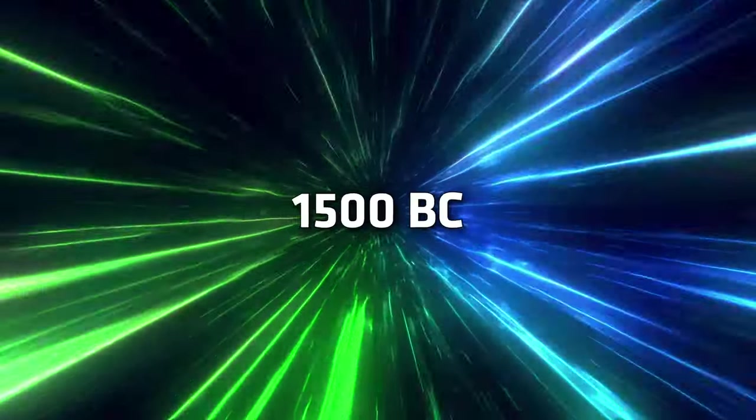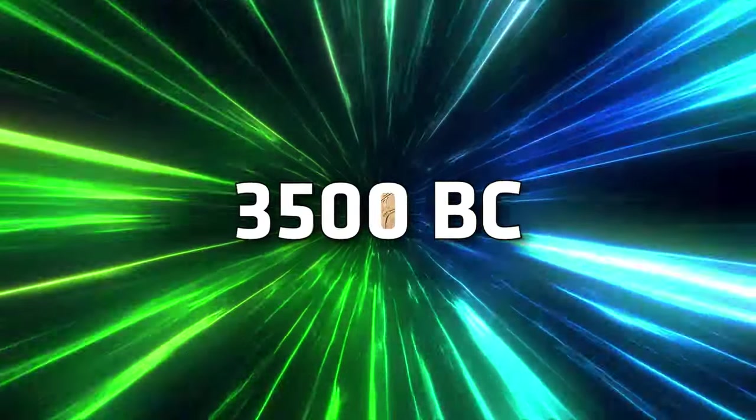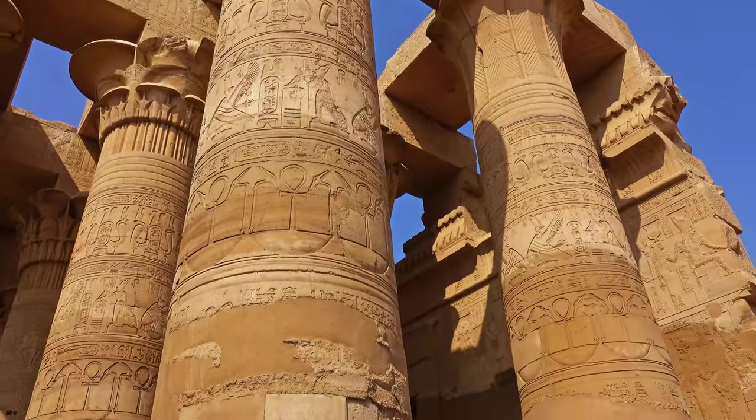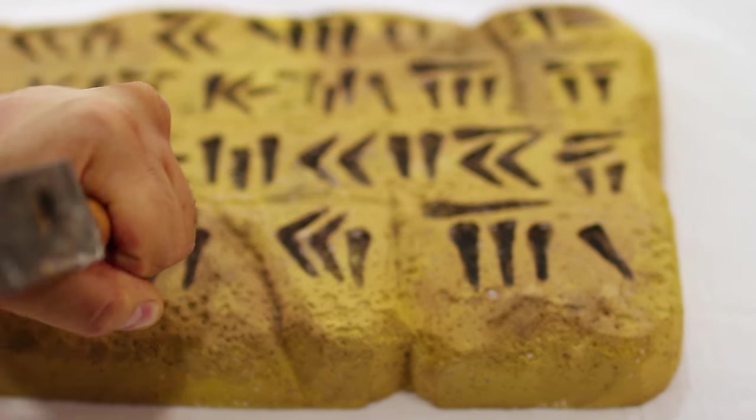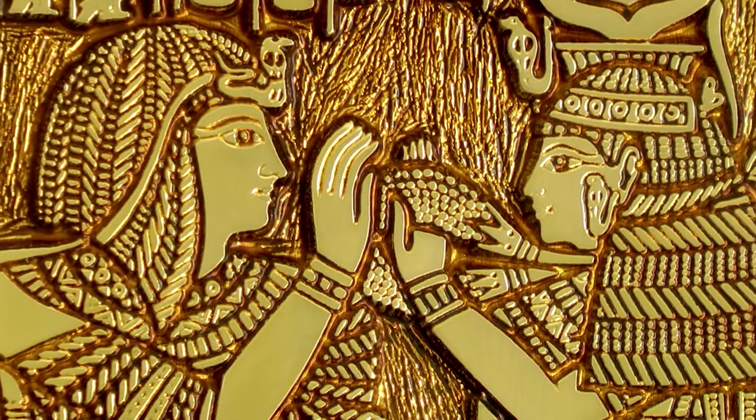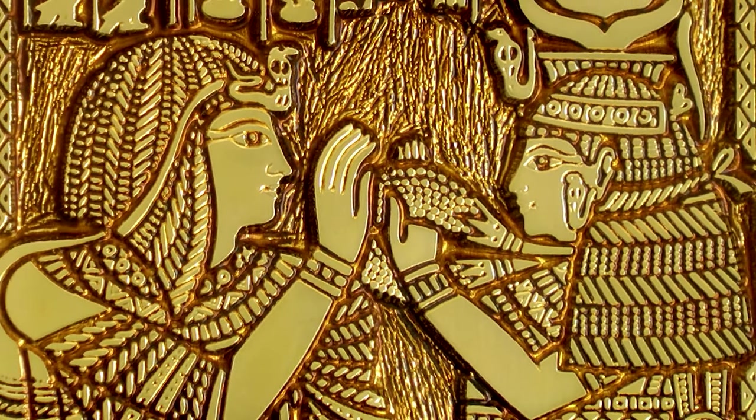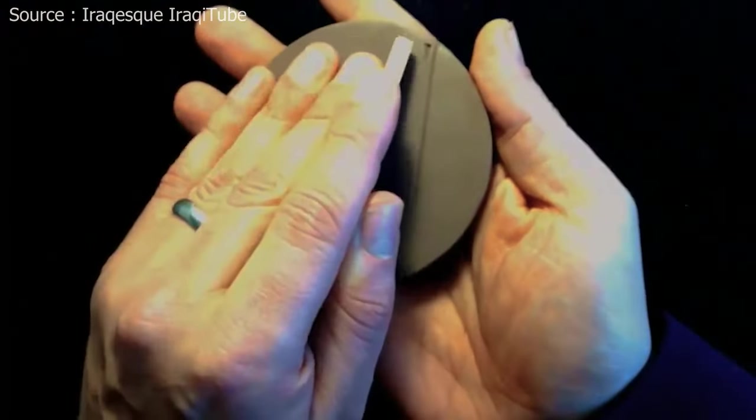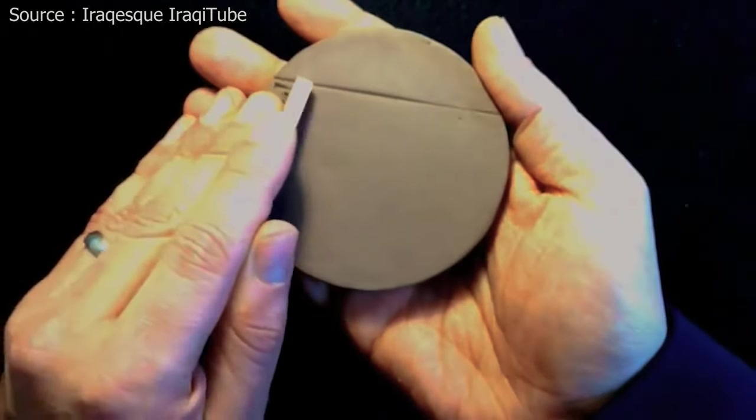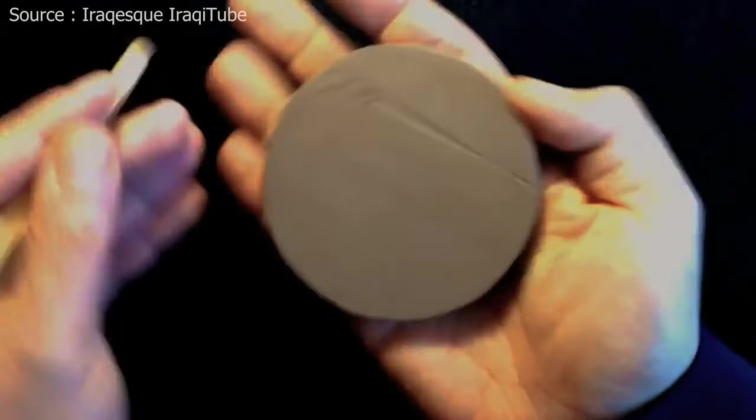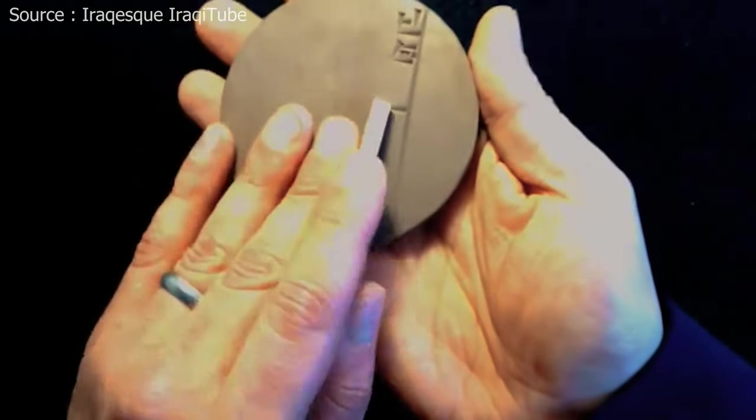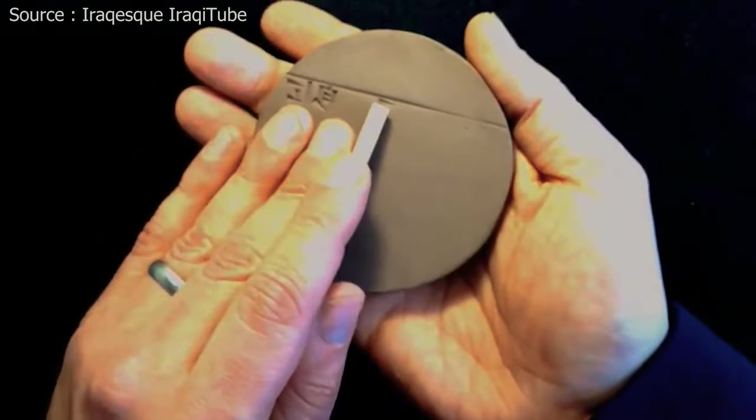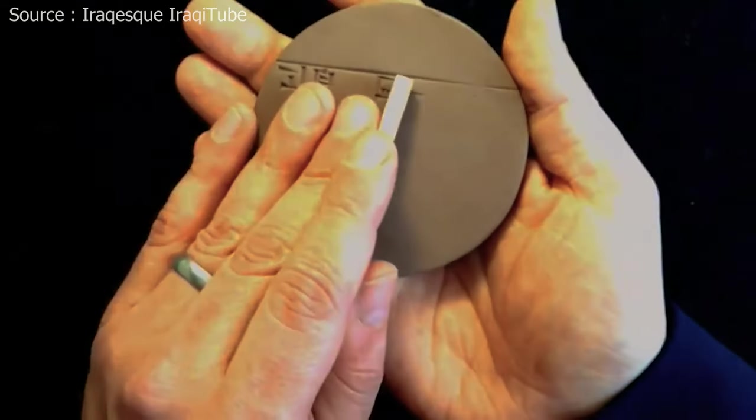Our story begins around 3500 BC in ancient Sumeria, where cuneiform was developed. The stylus was an essential tool, allowing the preservation of knowledge, stories, and the documentation of their civilization. The Sumerians used a stylus made of reeds or wood to press wedge-shaped marks into soft clay tablets. It was a revolutionary method of communication, and without these early writing instruments, our thoughts and stories would be lost to time.